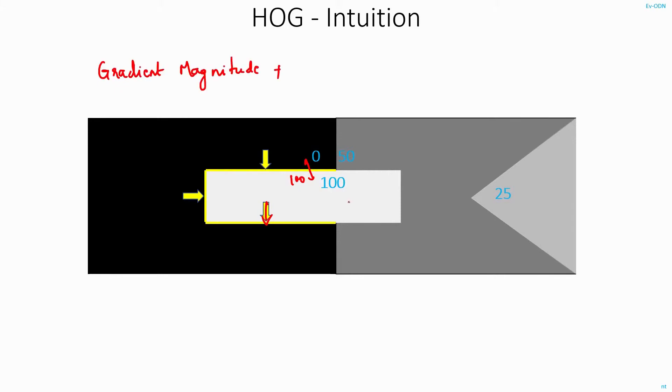And the areas which have the next highest gradient magnitude will be along these orange lines. Since you are transitioning from a pixel value of 0 to 50, the gradient magnitude in these areas will be around 50.